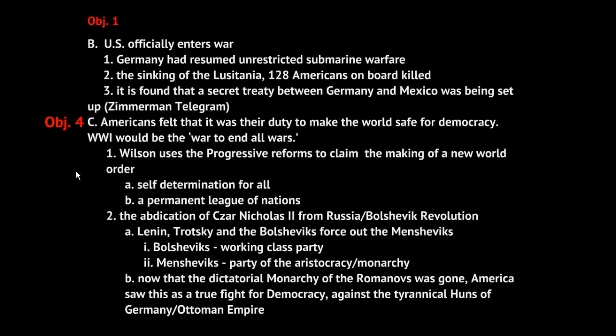Wilson starts working on a peace plan long before the war is even over. Part of his peace plan, the 14 Points, was to have self-determination for all countries involved — essentially giving every country the right to govern themselves. Wilson also draws up plans for a permanent League of Nations. Of all 14 points, point number 14, the creation of a League of Nations, is the only one that European leaders accept in the Treaty of Versailles.